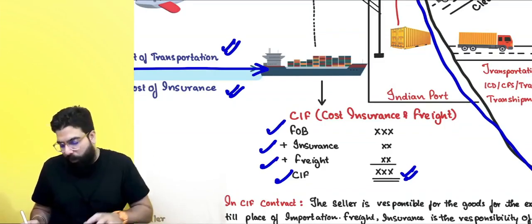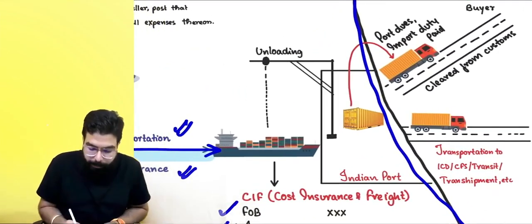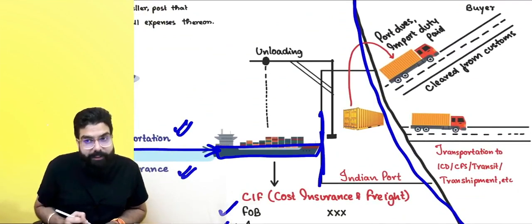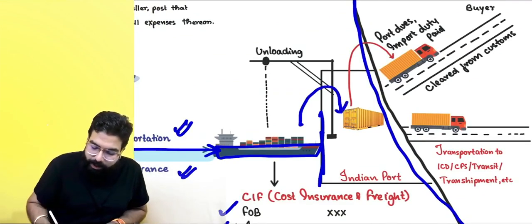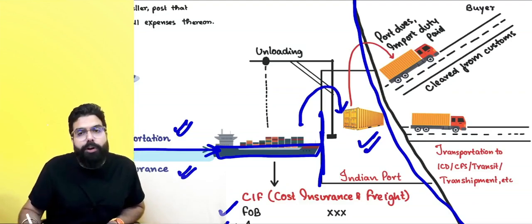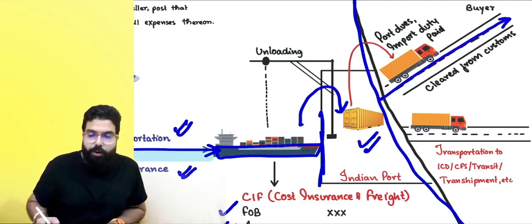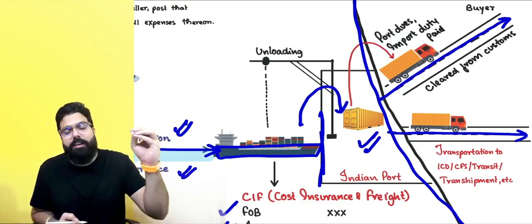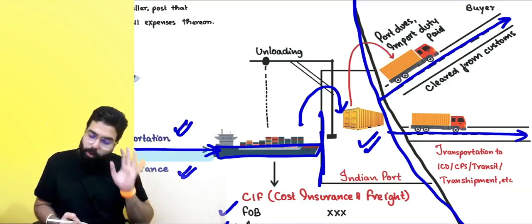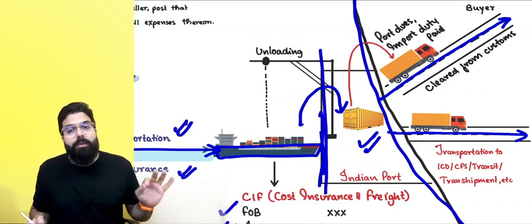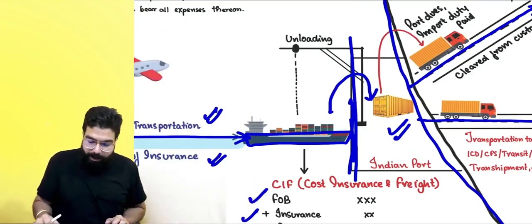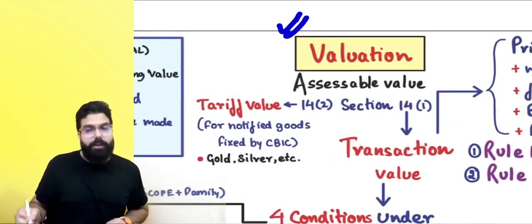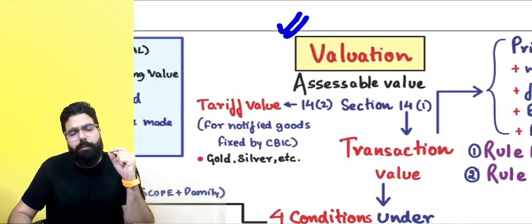CIF is the value on which you pay custom duty. All costs up to the ship hitting the port are included. Once the ship hits the port, unloading charges, Indian port charges, port dues, transportation to ICD or CFS, and transshipment costs are not included. CIF is the value on which custom duty is payable.